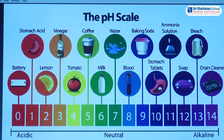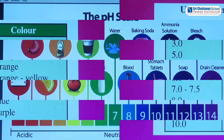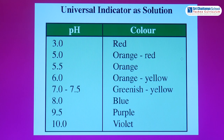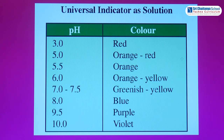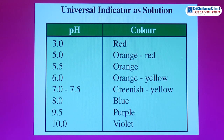Different colors appear as follows based on pH value: red color indicates pH 3.0, orange-red indicates pH 5.0, orange indicates pH 5.5, orange-yellow indicates pH 6.0, greenish-yellow indicates pH 7.0 to 7.5, blue indicates pH 8.0, purple indicates pH 9.5.